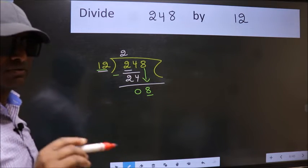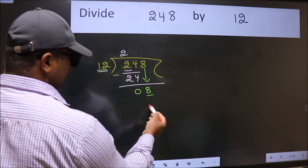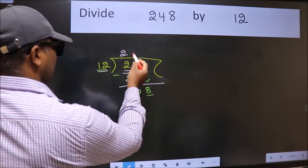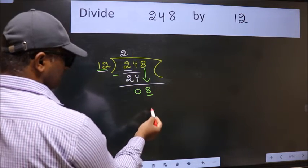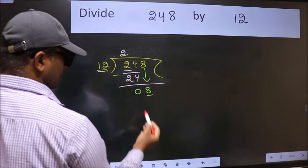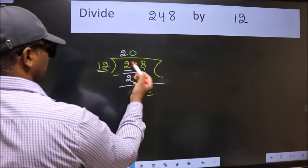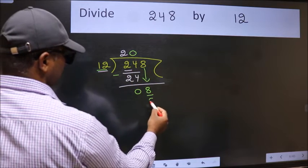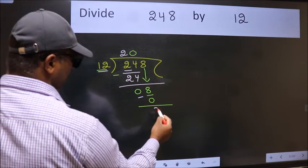Instead of that, what we should think of doing is which number should we take here. If I take 1, we will get 12. But 12 is larger than 8. So what we do is we take 0 here. So 12 into 0, 0. Now we subtract. We get 8.